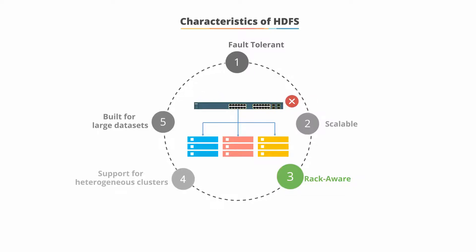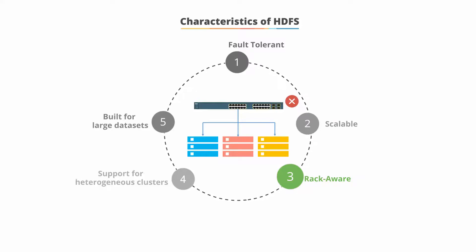Rack awareness achieves two things: one, by increasing the availability of a data block across multiple racks, and two, better cluster performance by segmenting the read operations across multiple racks.